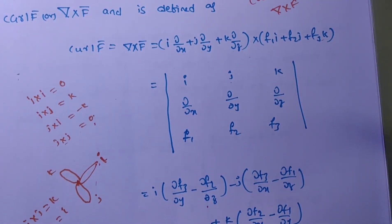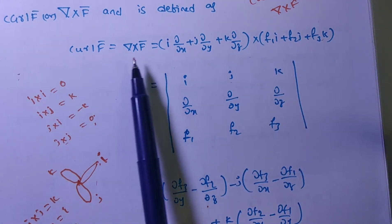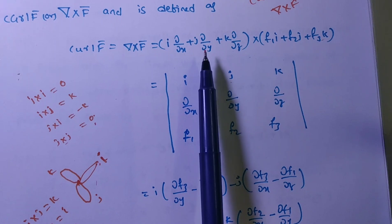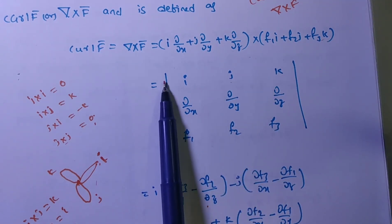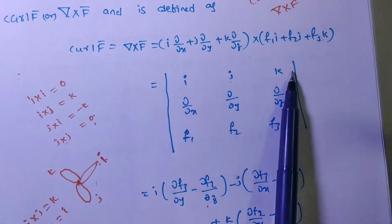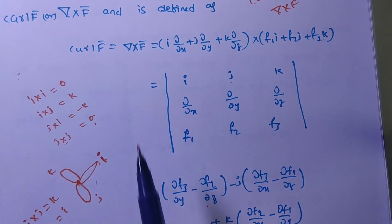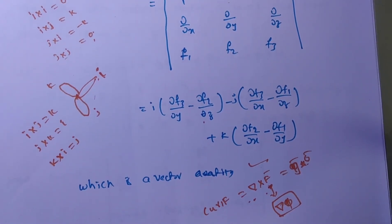Are you understood what curl f̄ is? To find curl f̄: write the given f̄ as f₁i + f₂j + f₃k. Del is i ∂/∂x + j ∂/∂y + k ∂/∂z. Write down the 3×3 determinant with i, j, k in the first row; the del coefficients in the second row; and the f̄ coefficients in the third row. The resulting determinant gives curl f̄. That is curl — nothing but rotation.